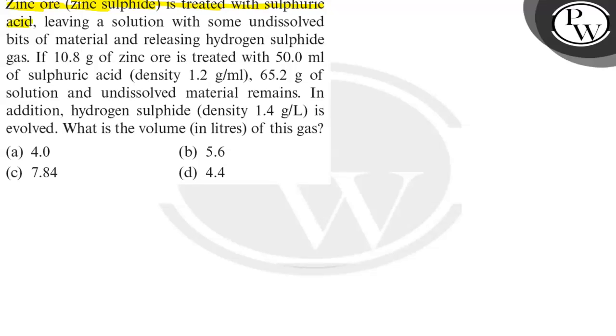Zinc ore ZnS is treated with sulfuric acid. What happens in the reaction? Leaving a solution with some undissolved bits of material and releasing hydrogen sulfide gas.